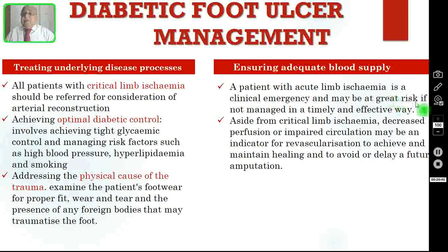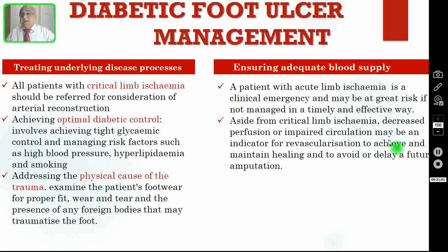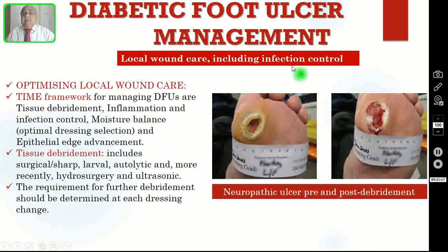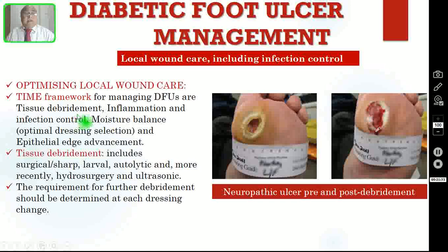Regarding ensuring adequate blood supply: the patient with acute limb ischemia is a clinical emergency and may be at great risk if not managed in a timely and effective way. Aside from critical limb ischemia, decreased perfusion or impaired circulation may be an indicator for revascularization to achieve and maintain healing and to avoid or delay future amputation. Coming to local wound care including infection control, you have to optimize local wound care using the TIME framework — T is tissue debridement, I is inflammation and infection control, M is moisture balance including optimal dressing selection, and E is epithelial edge advancement.